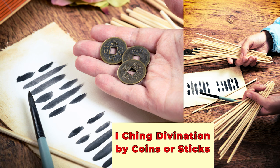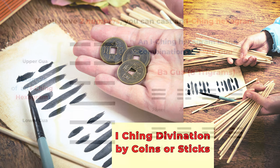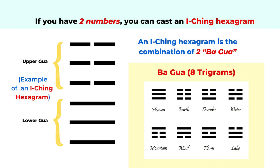So how do we use numbers to find the Yi Jing hexagram to interpret the future? Let's look at a typical Yi Jing hexagram. The symbol shown is an example — there are six lines. The top three lines are called the upper gua, and the bottom three lines are called the lower gua. Each set of three lines belongs to one of the ba gua, the eight trigrams. You can see the eight trigrams on the right side — it's a combination of the solid yang line and the broken yin line.